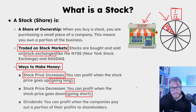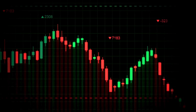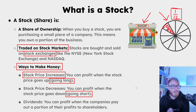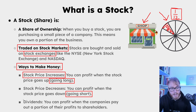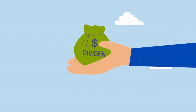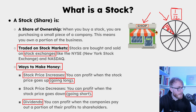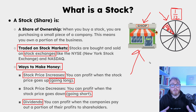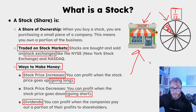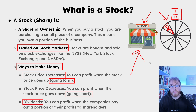Last but not least, let's say the stock goes sideways — you can actually still make money through dividends. This is basically when a business makes money and some companies distribute their profits to shareholders. So even if a stock goes sideways, you can make money from dividends.